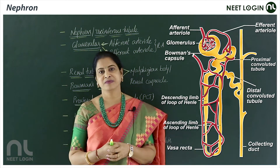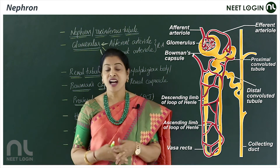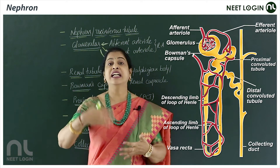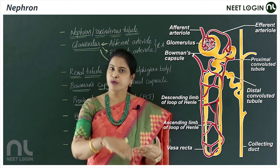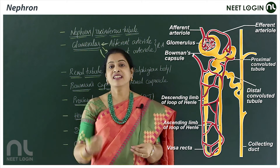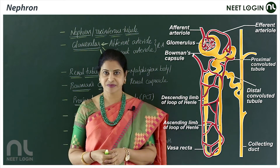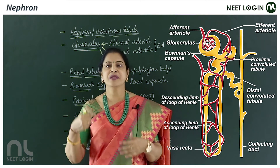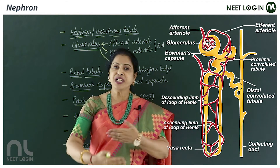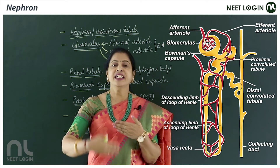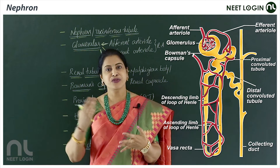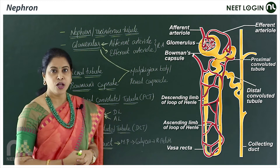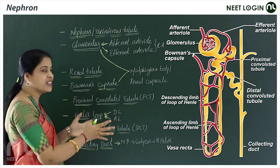Because nephrons are reduced after age 40, urinary and kidney-related problems are most common in elderly people, similar to how heart attack problems are more common in older age. For every 10 years after age 40, 10 percent of nephrons are reduced and destroyed.